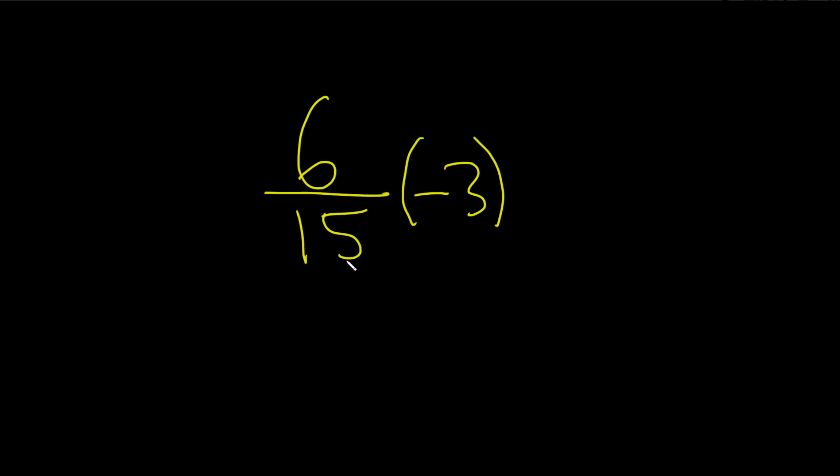In this problem we have 6 over 15 times negative 3. Because there's no symbol here and they're next to each other and there's a parentheses, it's assumed that we're multiplying.